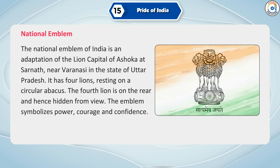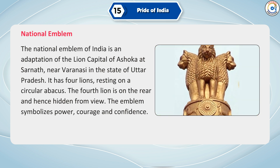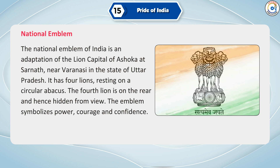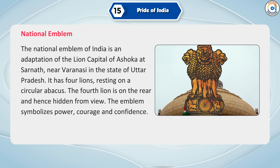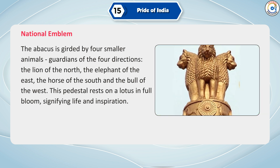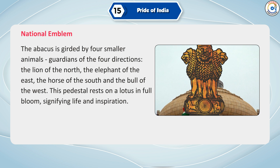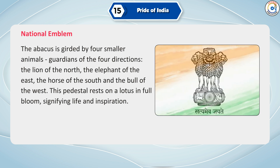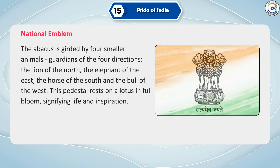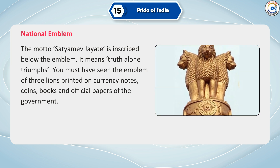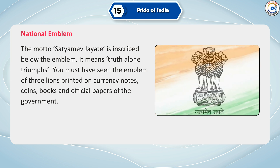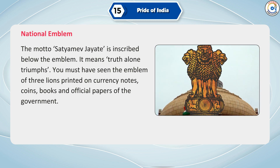The National Emblem of India is an adaptation of the lion capital of Ashoka at Sarnath, near Varanasi in the state of Uttar Pradesh. It has four lions resting on a circular abacus. The fourth lion is on the rear and hence hidden from view. The emblem symbolizes power, courage and confidence. The abacus is girded by four smaller animals, guardians of the four directions: the lion of the north, the elephant of the east, the horse of the south and the bull of the west. This pedestal rests on a lotus in full bloom, signifying life and inspiration. The motto Satyamev Jayati is inscribed below the emblem. It means: Truth alone triumphs. You must have seen the emblem of three lions printed on currency notes, coins, books and official papers of the government.